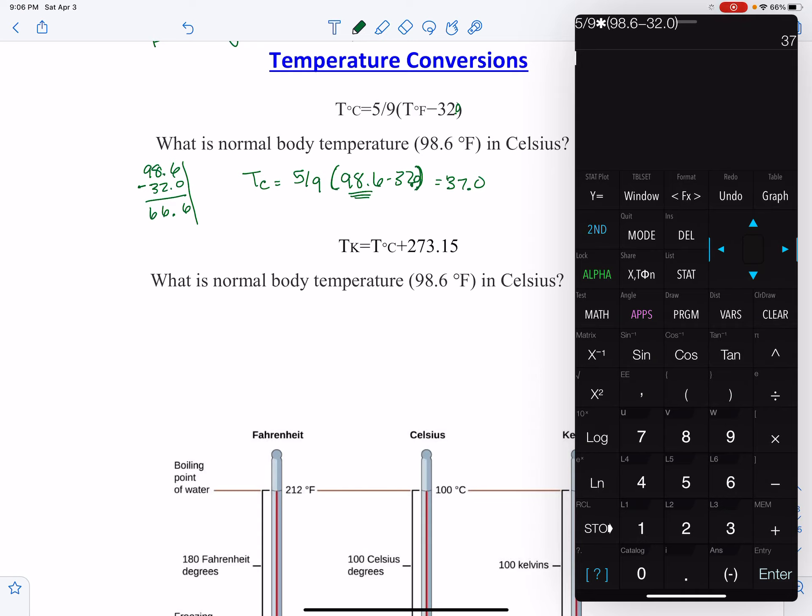Now we're going to add these two together. We know that the 98.6 is actually 37.0. So then when we add these together we have 273.15 plus 37.0. Many thermometers will only read to that tenths place, so just be aware of that when you're doing these calculations.